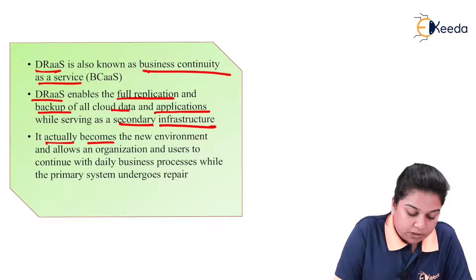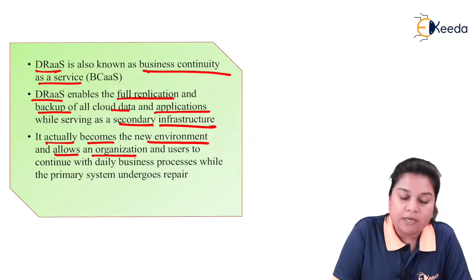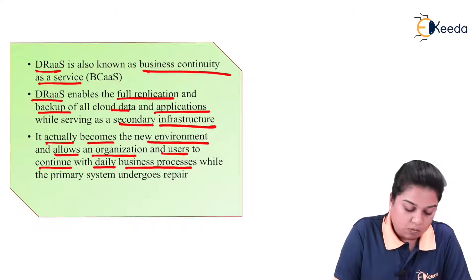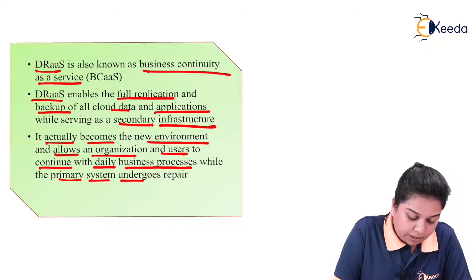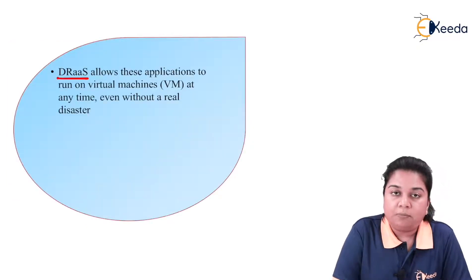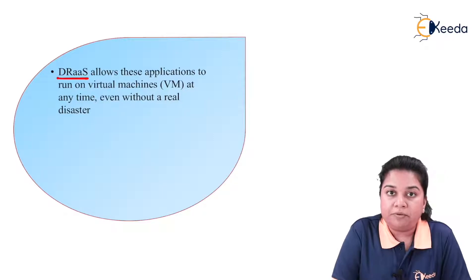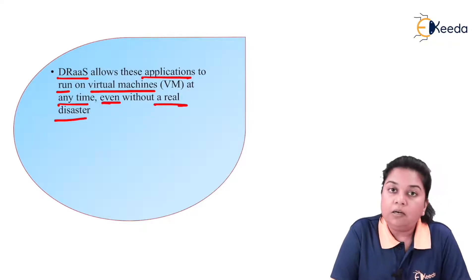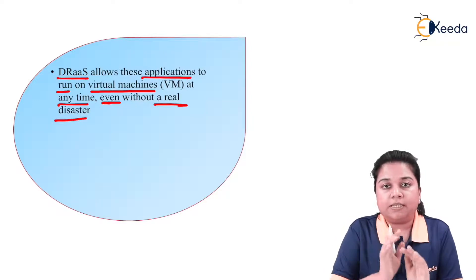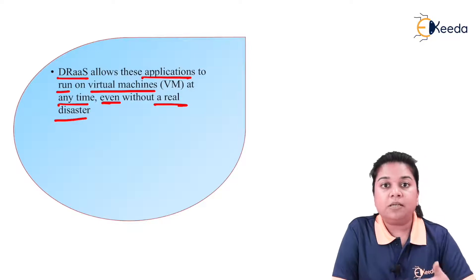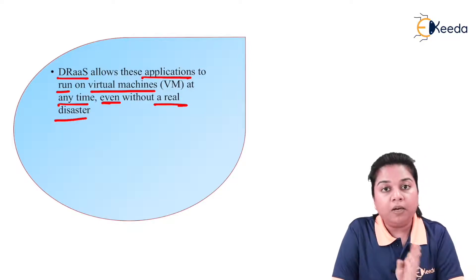It becomes the new environment and allows an organization and users to continue with daily business processes while the primary system undergoes repair. Disaster recovery as a service allows applications to run on virtual machines at any time, even without a real disaster. In distributed databases, we have replication or mirroring of data.